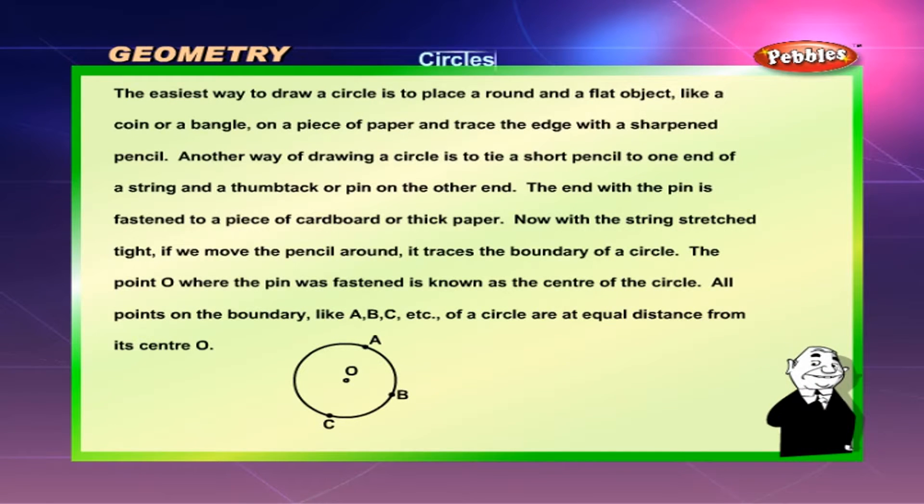The easiest way to draw a circle is to place a round and flat object like a coin or a bangle on a piece of paper and trace the edge with a sharpened pencil. Another way of drawing a circle is to tie a short pencil to one end of a string and a thumbtack or pin on the other end. The end with the pin is fastened to a piece of cardboard or thick paper. Now with a string stretched tight, if we move the pencil around, it traces the boundary of a circle. The point O where the pin was fastened is known as the center of the circle. All points on the boundary like A,